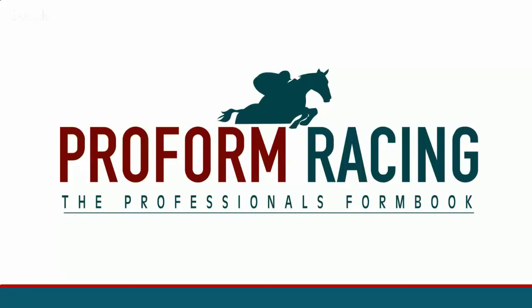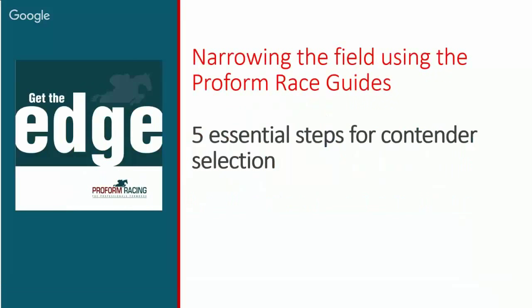Welcome everybody to our first series of webinars from Proform. We haven't done one of these for a while, but our aim is to have a regular series of events covering all aspects of Proform — giving you tricks and tips and making you aware of useful features. Tonight we'll be covering the basics: five steps for contender selection. We're also trialing the Google Hangout webinar facility, so if you're experiencing any technical difficulties please bear with us.